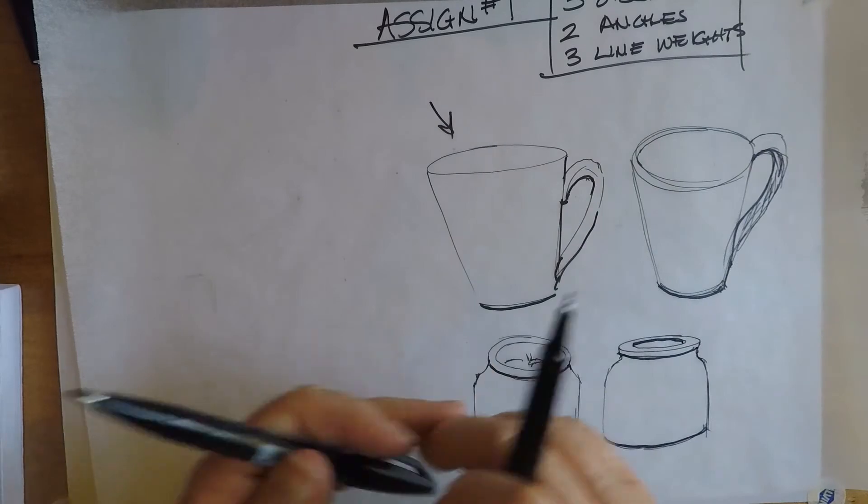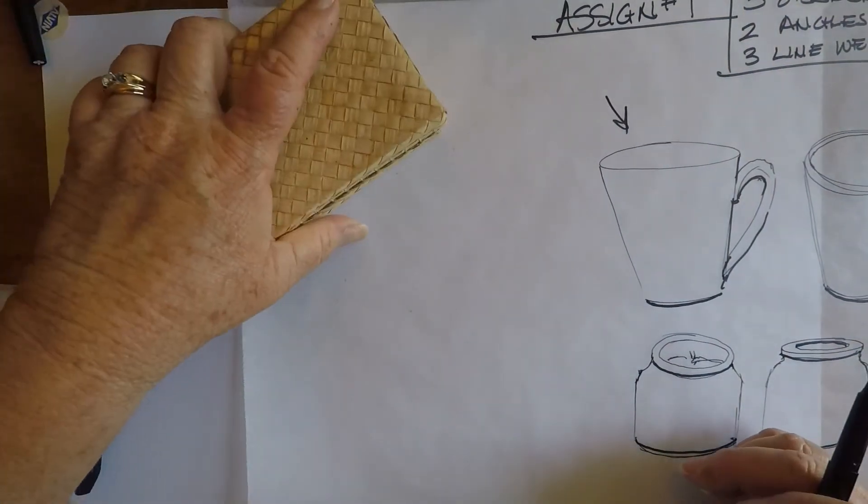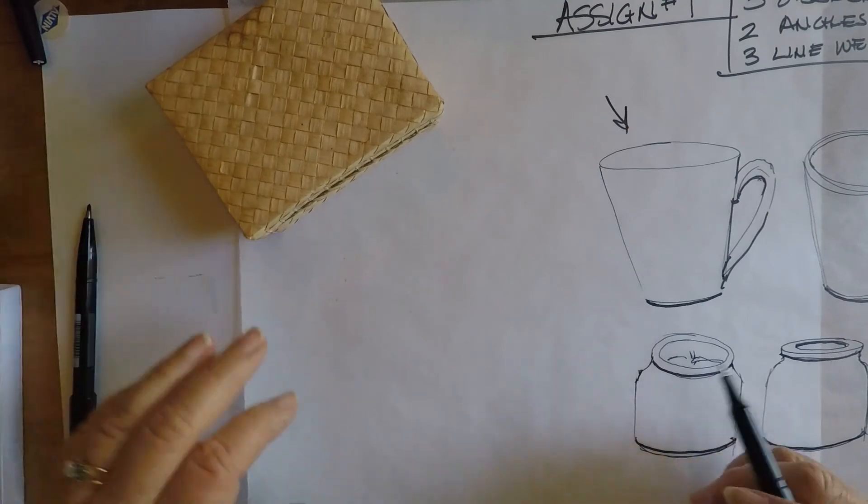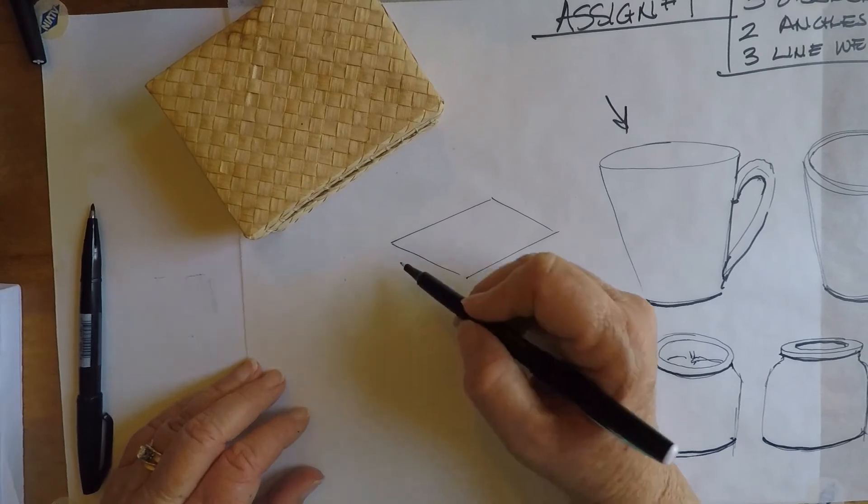What you don't want to do, let's just say I'm going to try doing this box. And sometimes people will get carried away with their heavy line weight. So they might go, okay, here's the top of the box, using light pressure.